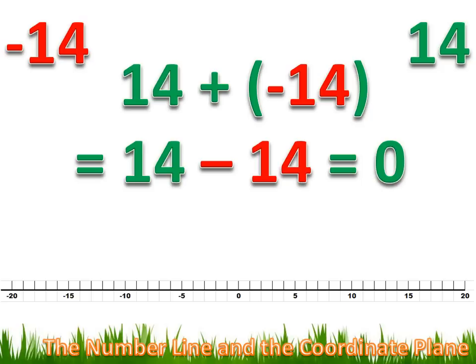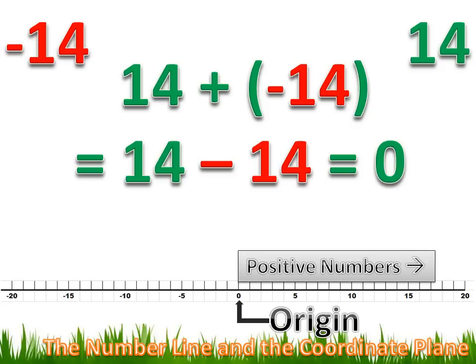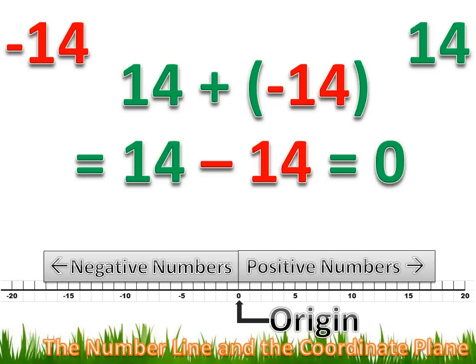We could look at this on a number line as well. On a number line, the zero — which is usually in the middle of the number line — is called the origin. All the numbers to the right of the origin are positive numbers, and they're getting bigger as we go further from the origin. All the numbers to the left of the origin are negative numbers, and they're getting smaller as we go further to the left from the origin.